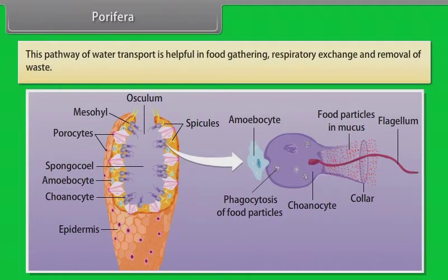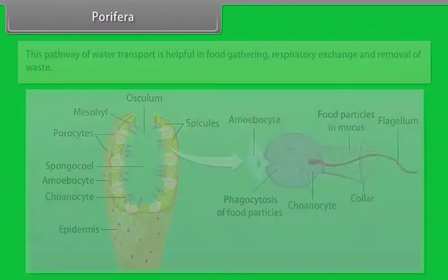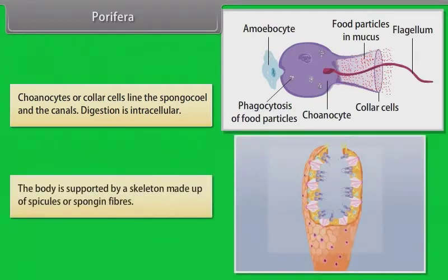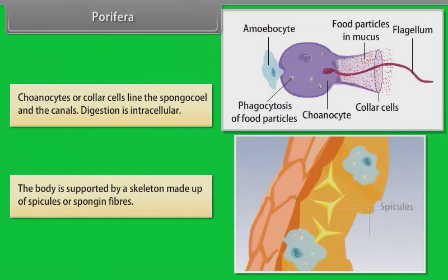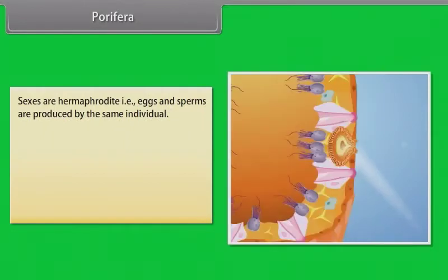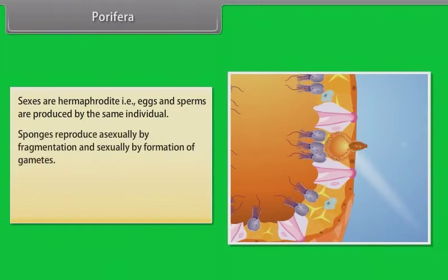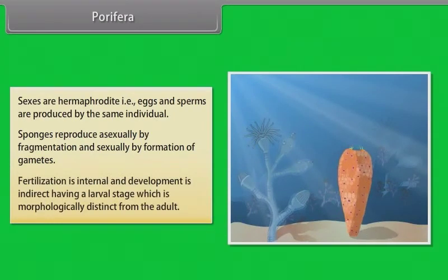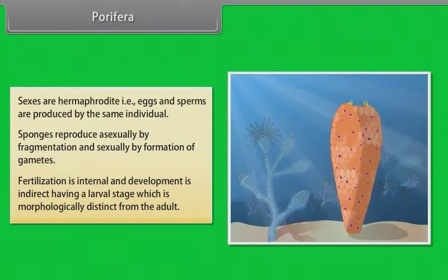This pathway of water transport is helpful in food gathering, respiratory exchange and removal of waste. Choanocytes or collar cells line the spongocoel and the canals. Digestion is intracellular. The body is supported by a skeleton made up of spicules and sponge fibers. Sexes are hermaphrodite — that is, eggs and sperms are produced by the same individual. Sponges reproduce asexually by fragmentation and sexually by formation of gametes. Fertilization is internal and development is indirect, having a larval stage which is morphologically distinct from the adult.